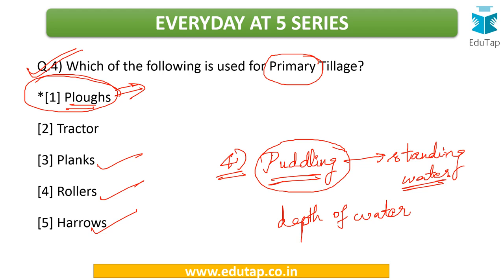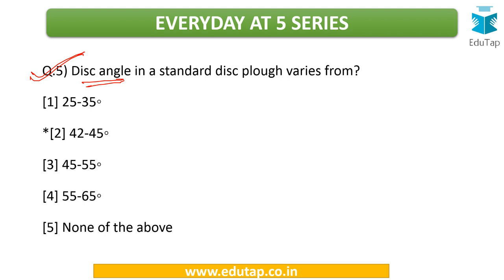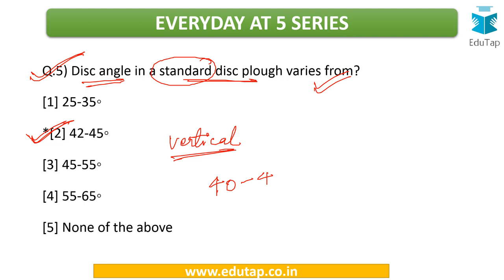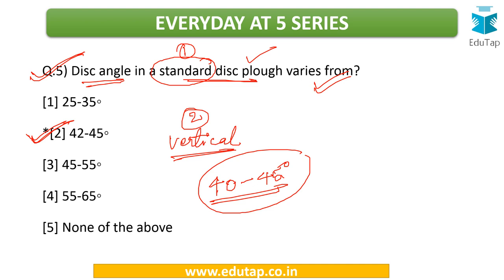The fifth question is: the disc angle in a standard disc plow varies from — and the answer is 42 to 45 degrees. There is another type called the vertical disc plow, for which the angle is 40 to 45 degrees. There are two types of disc plow: standard and vertical. If you do not find the option 42 to 45 in an exam, look for 40 to 45 degrees. For standard it is 42 to 45, and for vertical it is 40 to 45.